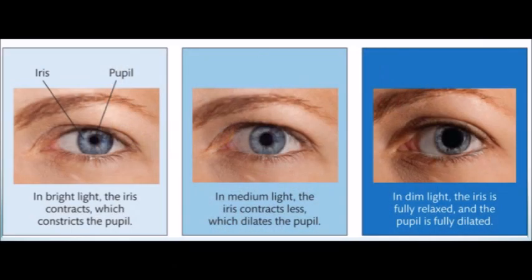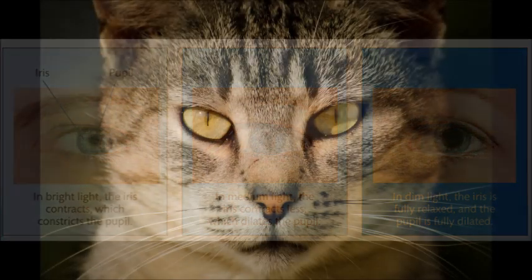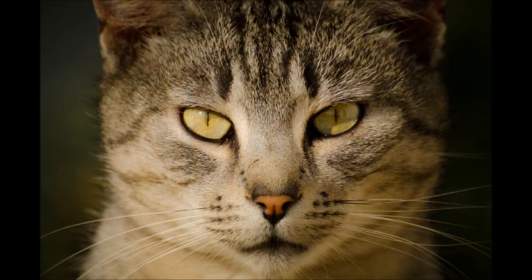Human pupils are strictly circular and have less of an ability to expand and contract. The vertical slit shape also aids in perceiving color accurately, as a slit pupil allows light into the entire vertical length of the lens, while a circular pupil only allows light into the central region of the lens. A vertical slit pupil also enhances depth perception, as well as the sharpness of horizontal objects and quick horizontal movements.